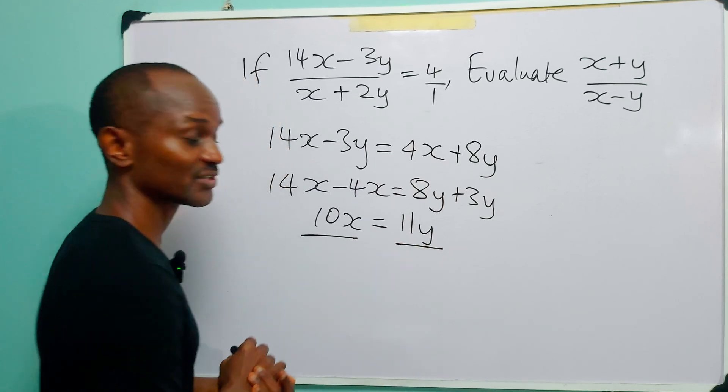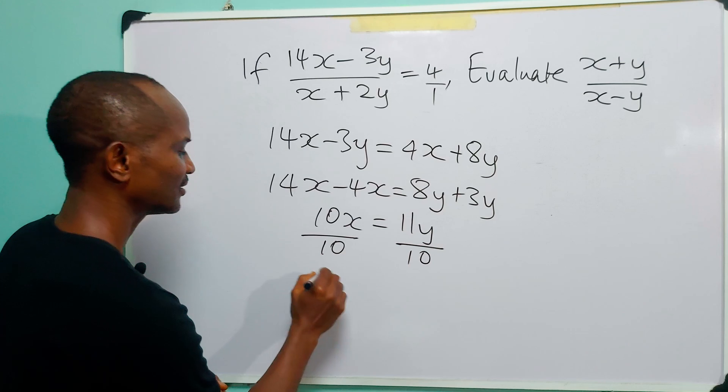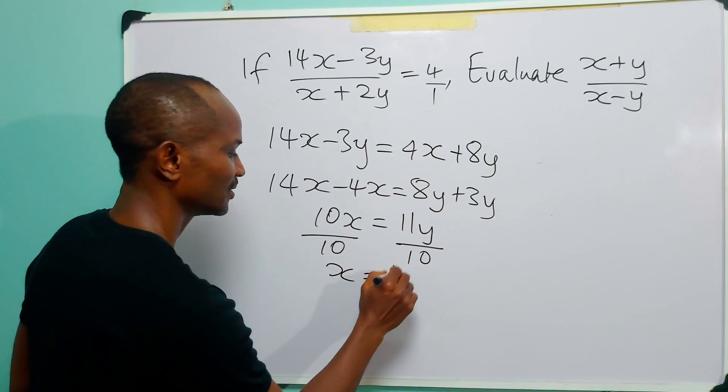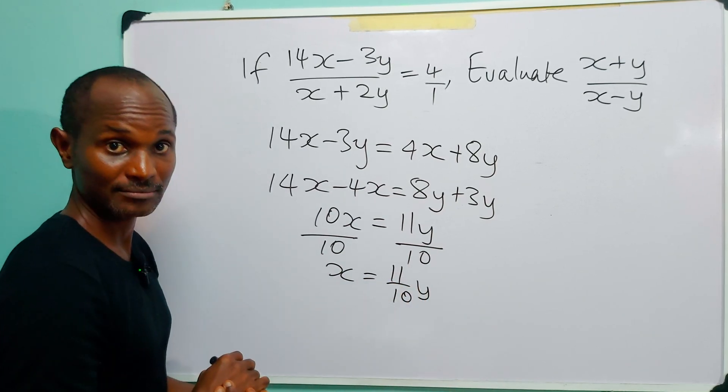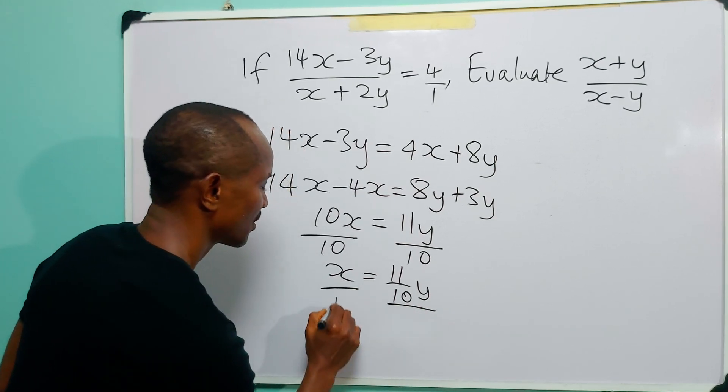Now next, you divide both sides of this equation by 10, and you have that x = (11/10)y. And you divide both sides of this equation by y.